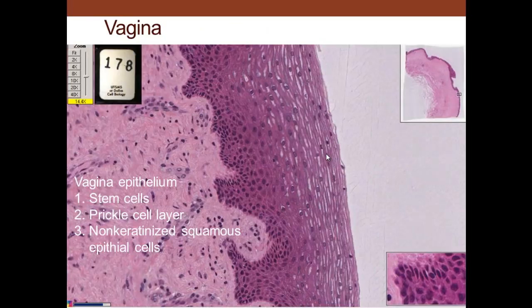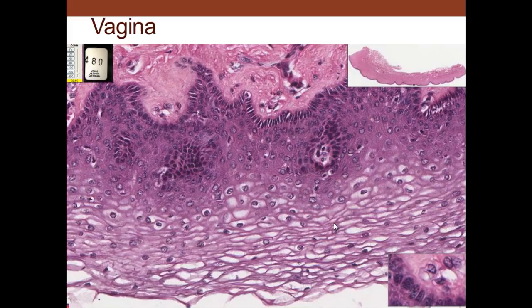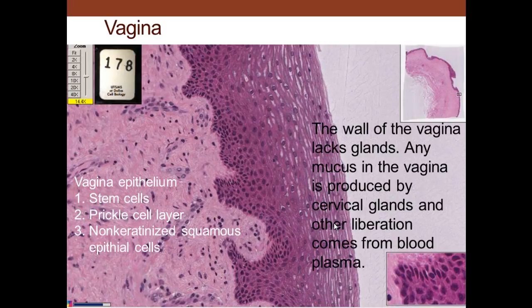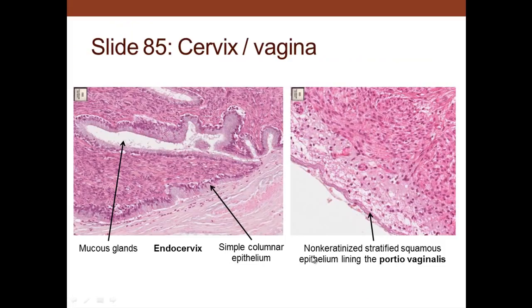We can see the stem cells on the surface — prickle cells — and non-keratinized stratified squamous epithelium is what we have here. The basal cells at the base give rise to cells that are ultimately sloughed off. The wall of the vagina lacks glands; any mucus in the vagina is produced by cervical glands which may slip down, or other lubrication comes from blood plasma — leakage of blood plasma into the lumen of the vagina — and that yields lubrication for copulation to occur.